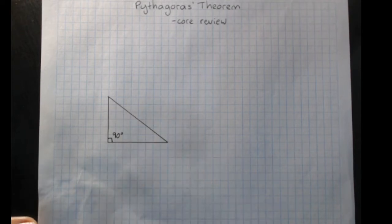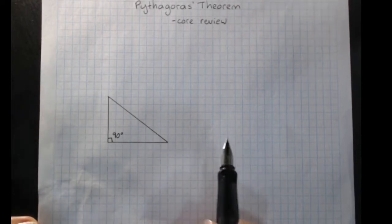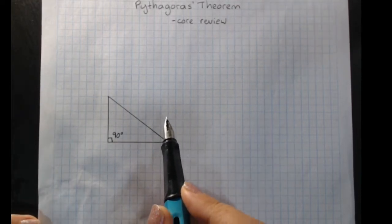Now, we need to know a bit about how to label a right-angled triangle. Pythagoras' Theorem only works with right-angled triangles, but it's pretty important for those.